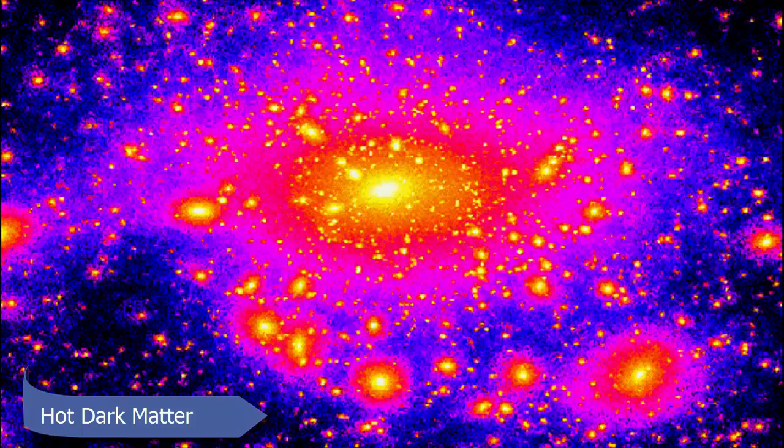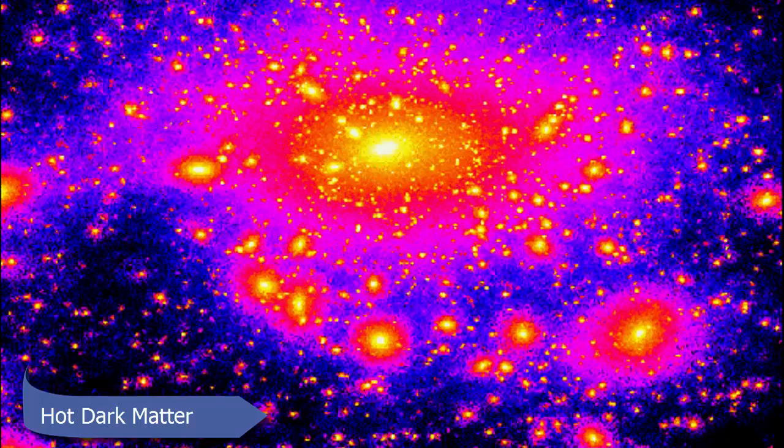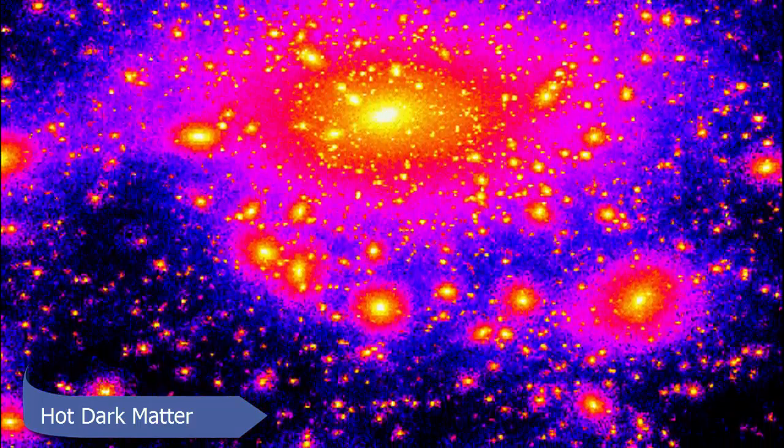Hot dark matter is any kind of dark matter that is moving close to the speed of light. It isn't moving at the speed of light and there is no reason to believe it would be moving at the speed of light.